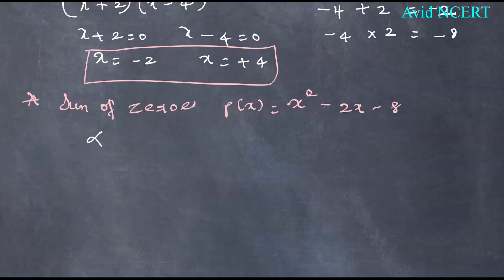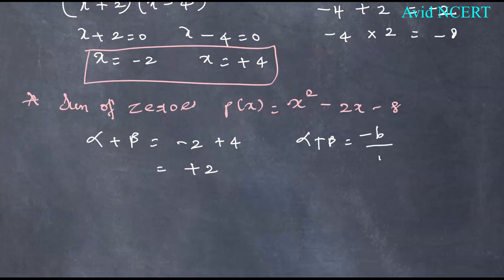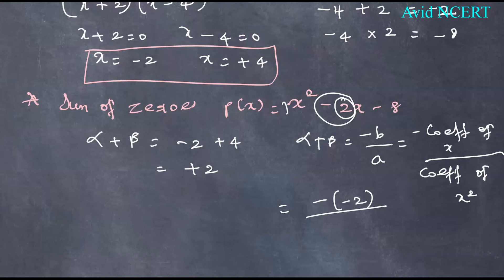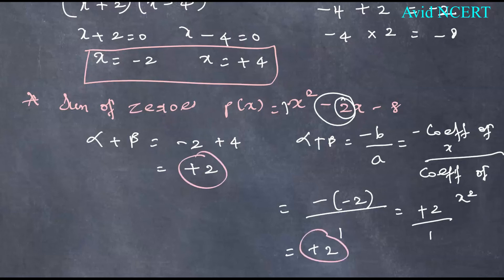Second step — sum of zeros: for p(x) = x squared minus 2x minus 8, the zeros are x = minus 2 and x = plus 4. So alpha plus beta equals minus 2 plus 4, which equals plus 2. Using the formula, alpha plus beta equals minus b by a, which is minus of the coefficient of x divided by the coefficient of x squared: minus of (minus 2) divided by 1, which equals plus 2. Both values are equal, confirming the relation.